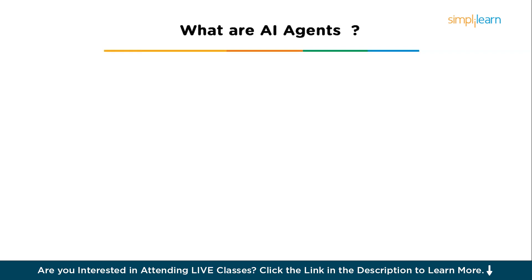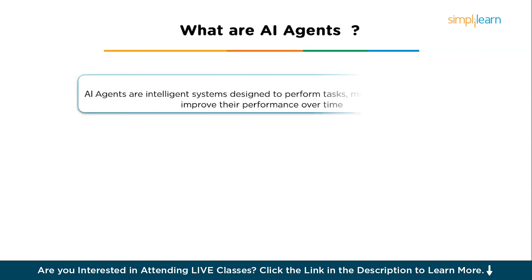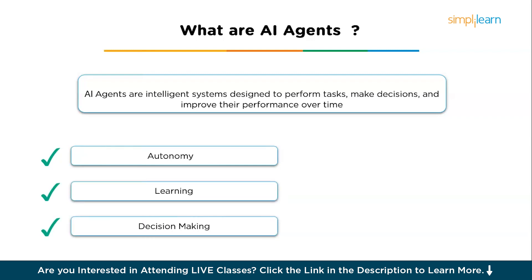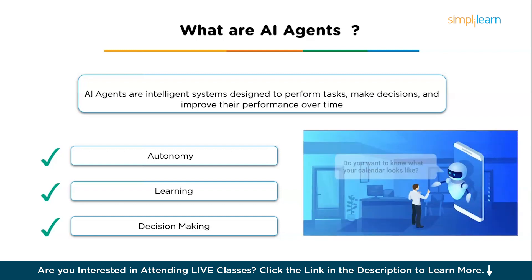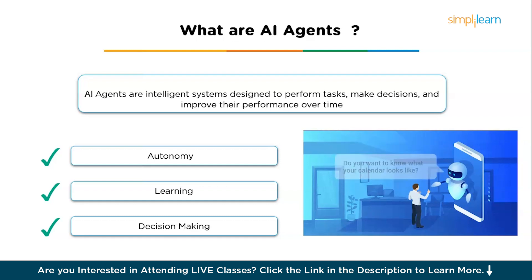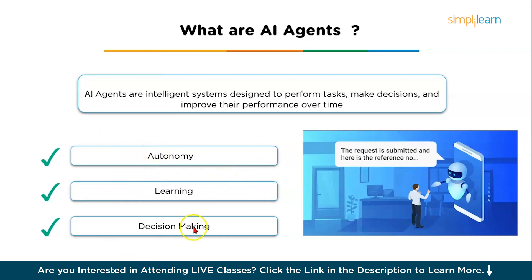AI agents are intelligent systems designed to perform tasks, make decisions, and improve their performance over time through learning, without needing continuous human intervention. These agents are programmed to act autonomously and can simulate intelligent behavior, making them capable of interacting with their environment to achieve predefined goals.